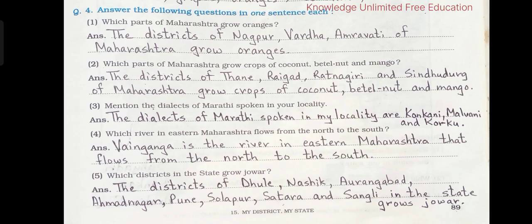Let's see the next part. Question number 4: Answer the following questions in one sentence each. 1. Which parts of Maharashtra grow oranges? The districts of Nagpur, Wardha, and Amravati of Maharashtra grow oranges.